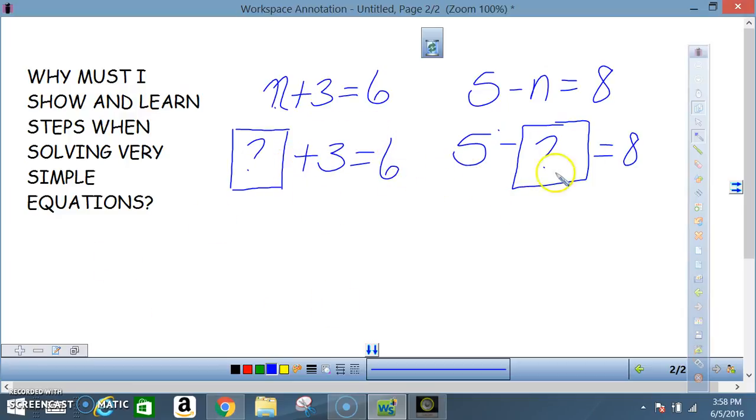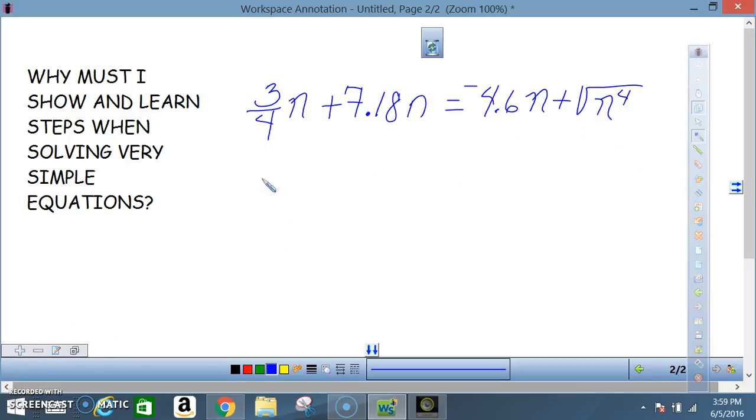Now here's another reason why you want to learn these steps. Look at this problem here: 3/4n plus 7.18n is equal to negative 4.46n plus the square root of n to the fourth. Notice you can no longer guess. You can stay here all year, for the next three or four years, trying to guess what n is and you would never figure it out. The only way to solve this equation for n is you have to know all your steps to work through and solve this problem algebraically.